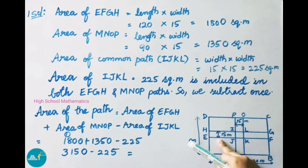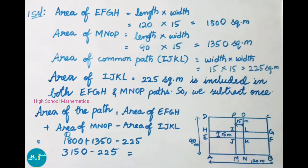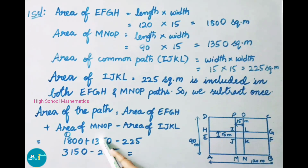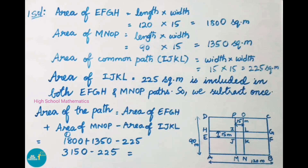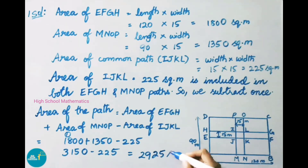Area of the path equals area of EFGH plus area of MNOP minus area of IJKL. That is 1800 plus 1350 minus 225. Adding: 1800 plus 1350 equals 3150. Then 3150 minus 225: 50 minus 25 is 25, 31 minus 2 is 29. Therefore 3150 minus 225 equals 2925 square meters.